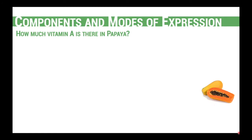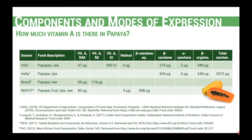Let's start by looking at some problems regarding components and modes of expression. If I want to know how much vitamin A is in papaya — a very simple food that we can find in many different food composition tables — I collected data regarding vitamin A and the components related to vitamin A in four different food composition databases: the US food composition database, one from India, one from Brazil, and one from West Africa.